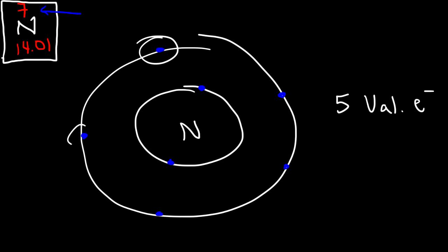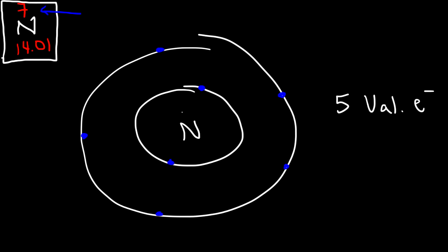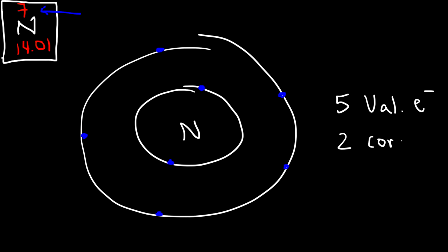Here are the 5 valence electrons of the nitrogen atom. The inner shell electrons — the ones on the inside that are not valence electrons — are known as core electrons. So nitrogen contains 2 core electrons, for a total of 7 electrons, which goes with the atomic number of nitrogen.